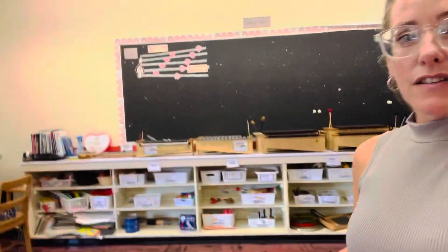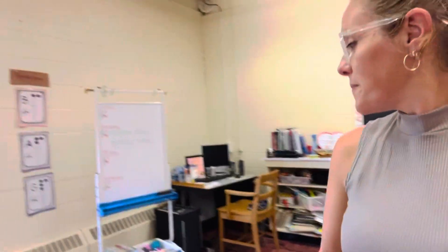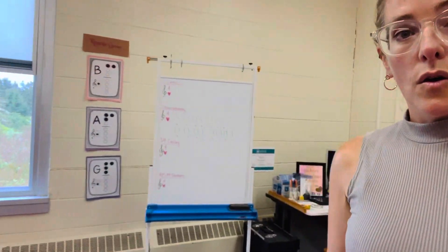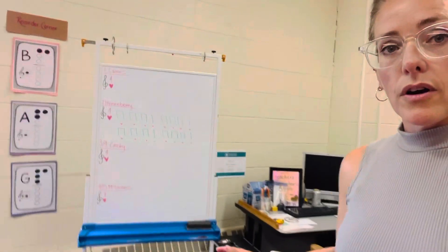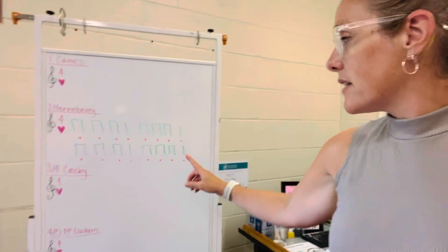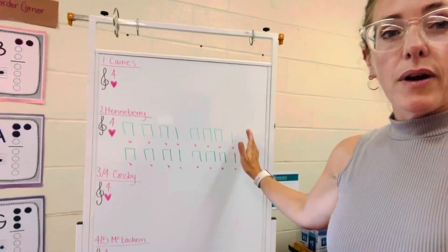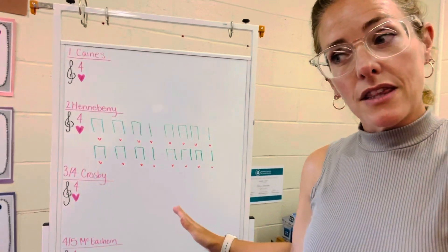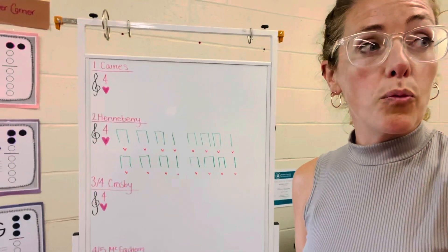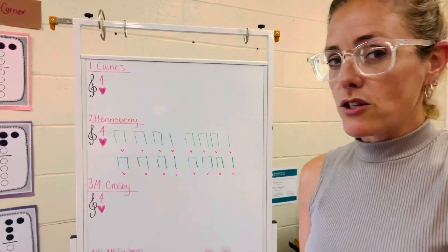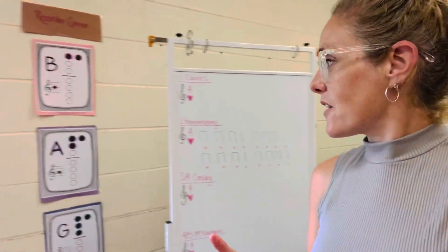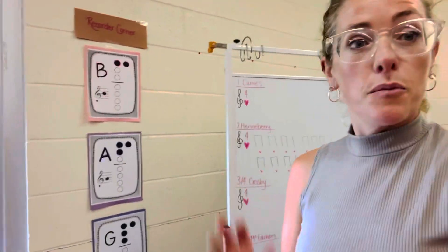This is our music literacy corner, so students will learn a reading song per month and they will write the rhythm and the solfa throughout the month. At the end of the month we usually do a bit of group work where they do that on their own and then play a simple song.